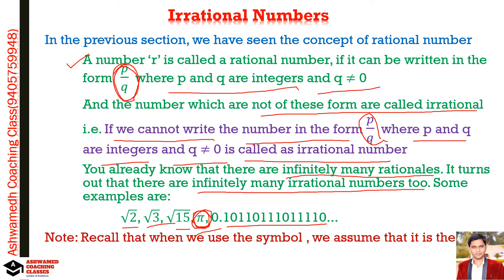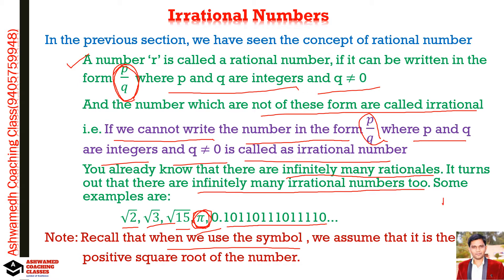One important note: when we use the symbol √ (square root), we assume it is the positive square root of the number. For example, √4 could be +2 or −2, but here we only consider the positive square root, which is 2. We do not consider −2.